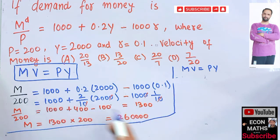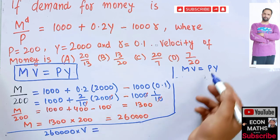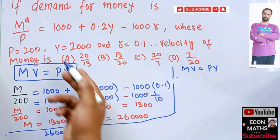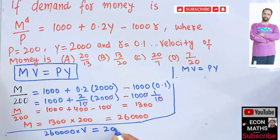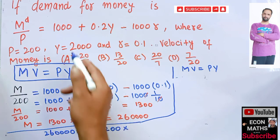Let me write it here to save the space. So we have M, we got 260,000, then V is equal to, price level is being given as 200, so let me write here 200 times Y is 2000.